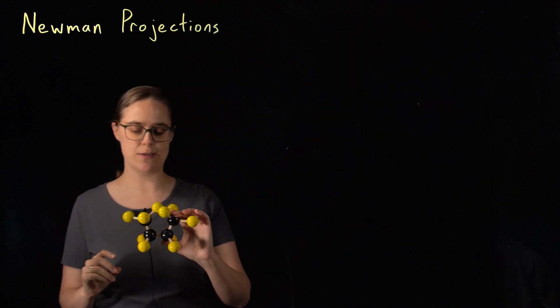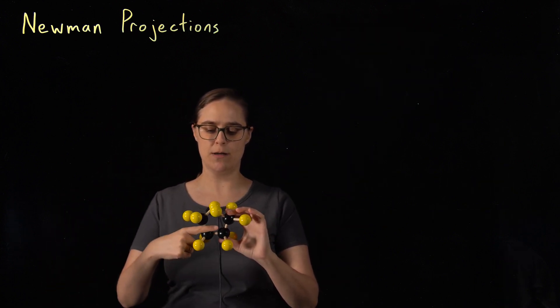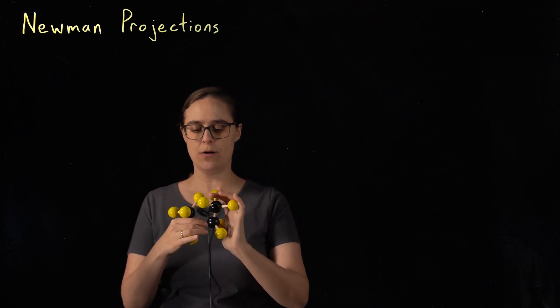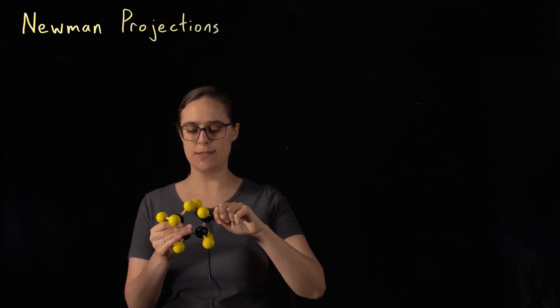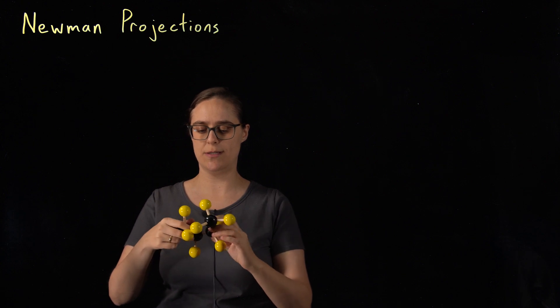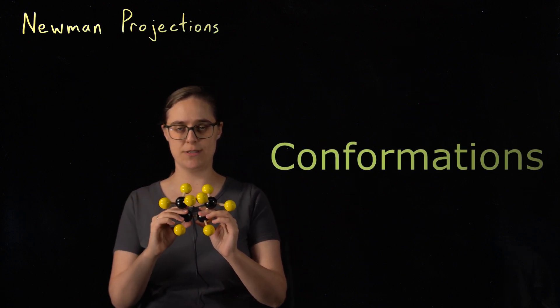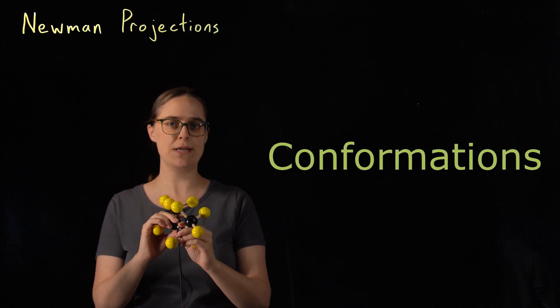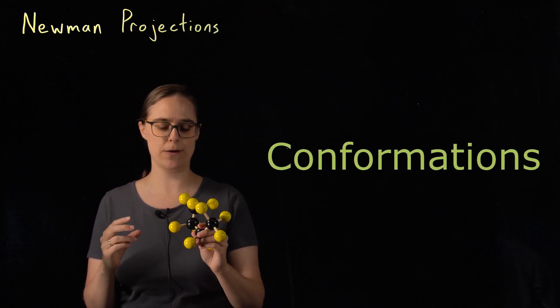Let's take a closer look at this molecule. I have four black carbons in a chain and a total of 10 yellow hydrogens. All of these bonds are single bonds, and single bonds can rotate. That means I can have a lot of different possible arrangements of this molecule. These arrangements are called conformations, and a Newman projection is useful for drawing the conformation about a specific bond.